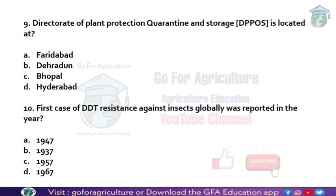Next: the Directorate of Plant Protection, Quarantine and Storage is located at Faridabad.